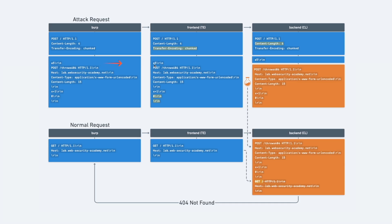The first chunk size is A5, followed by carriage-return line-feed, covering everything from POST up to and including X equals one. The hexadecimal size for that content is A5. When forwarded to the backend, which uses content-length, we've set a content-length of four, so the backend thinks the request ends right after the A5 chunk size. The smuggled POST request for a non-existent resource is then sitting as a prefix in the backend buffer, with a content-length of 15 set in the smuggled request.